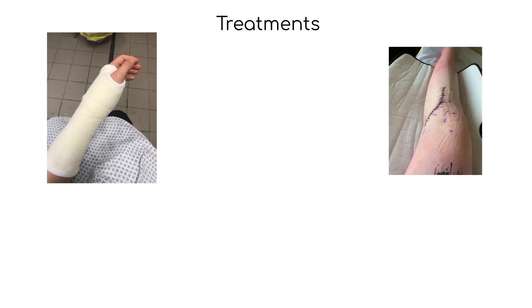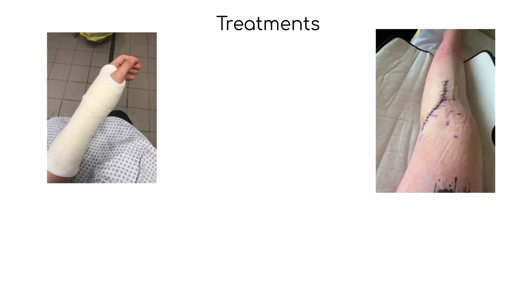Surgery — in some cases, surgery may be necessary to realign the bone and stabilize it with pins, screws, plates, or rods. This is usually required for complex fractures, such as those that involve multiple breaks or displaced bone fragments.